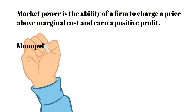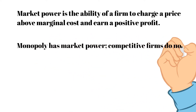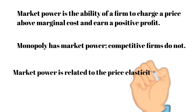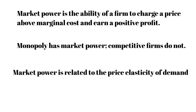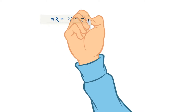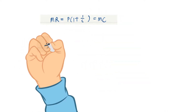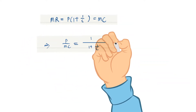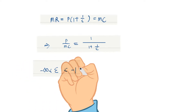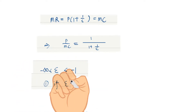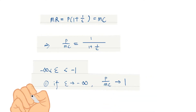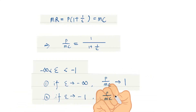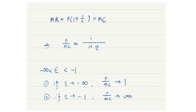A monopoly has market power — the ability of a firm to charge a price above marginal cost and earn a positive profit. Market power is related to the price elasticity of demand. Market power can be measured using the ratio of the price to marginal cost, and it depends only on the elasticity of demand at the profit-maximizing quantity.